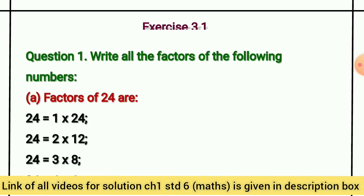Question No. 1: Write all the factors of the following numbers — यानि कि हमें यहां दिये गए numbers के factors लिखने हैं। Factors of 24 — यानि कि हमें 24 के factors लिखने हैं। 24 के factors लिखने के लिए हमें यह जानना होगा कि हम 24 को किससे divide करेंगे तो answer 0 मिलेगा। यानि कि जिन दो नंबर को हम multiply करेंगे और उसका answer 24 मिलेगा, वो 24 के factors होंगे।